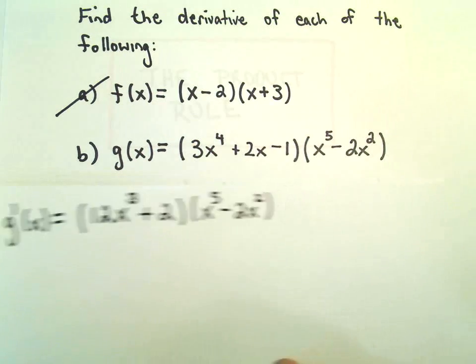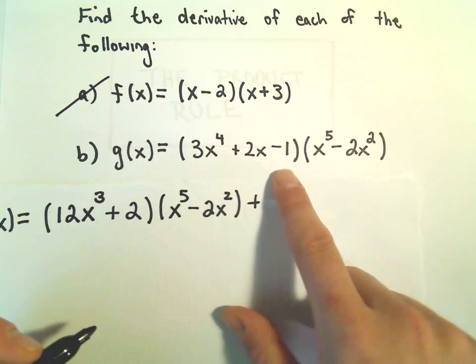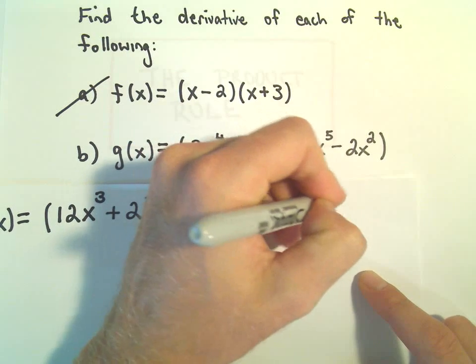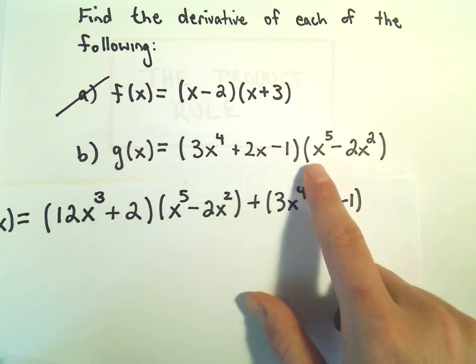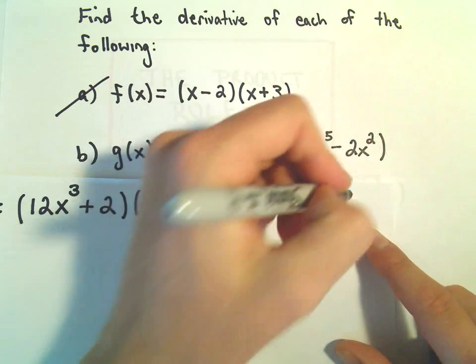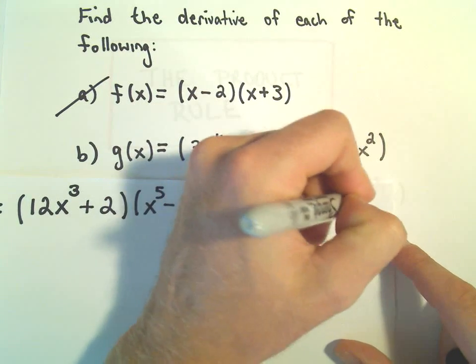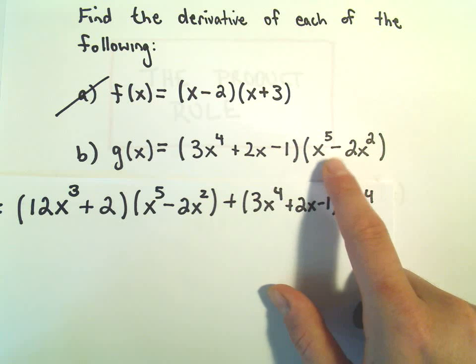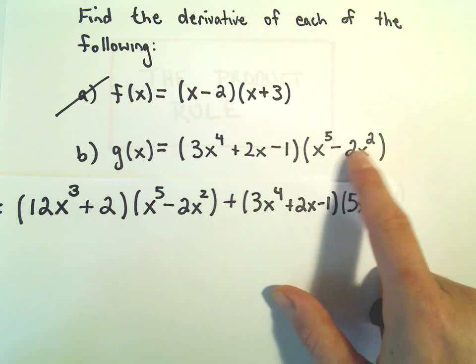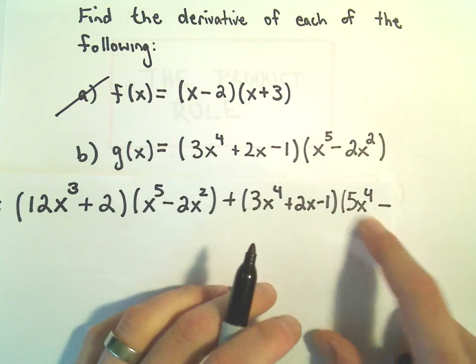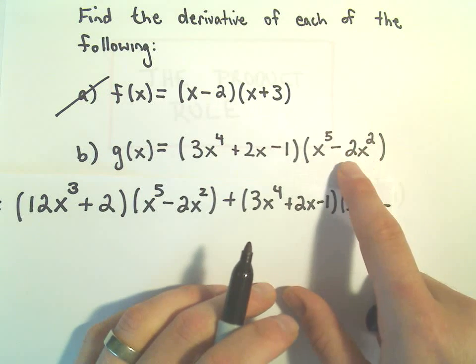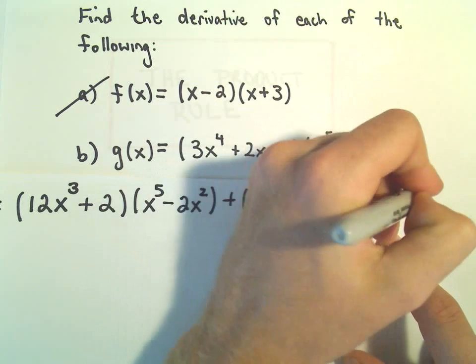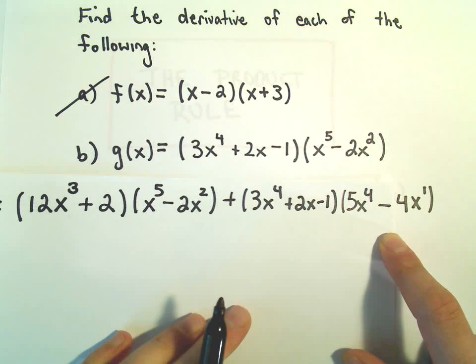And then we'll leave the first factor alone, so we'll have 3x⁴ + 2x - 1. And when we take the derivative of x⁵, the 5 will come out front, we'll take 1 away from the exponent. Then when we take the derivative of negative 2x², the negative 2 comes along, and the 2 will multiply by the 2, which gives us 4. And then we'll have x, we take 1 away from the exponent, so that'll be the second factor.